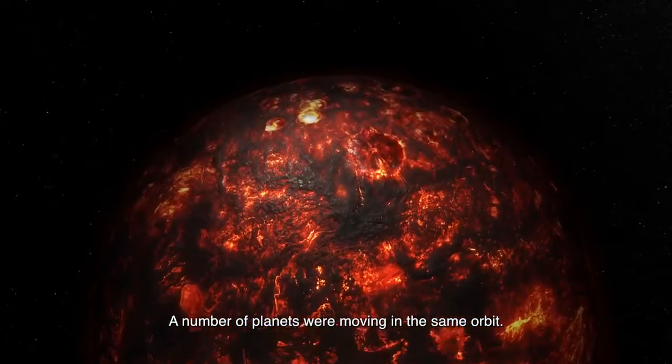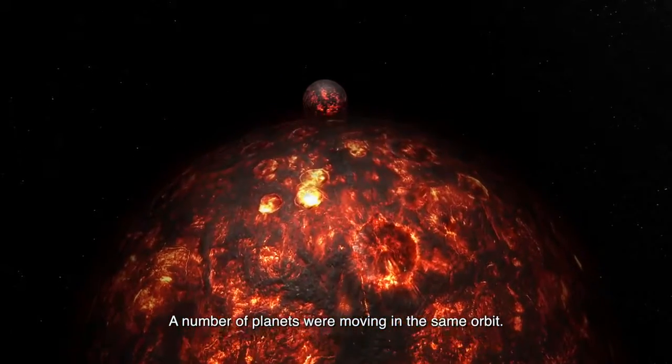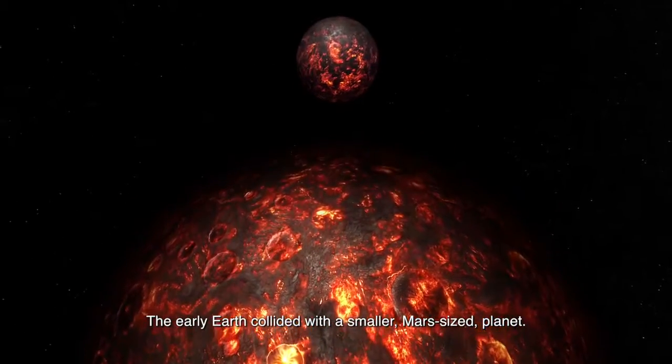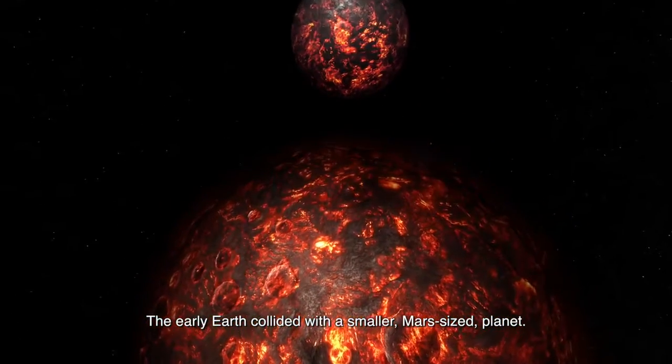A number of planets were moving in the same orbit. The early Earth collided with a smaller, Mars-sized planet.